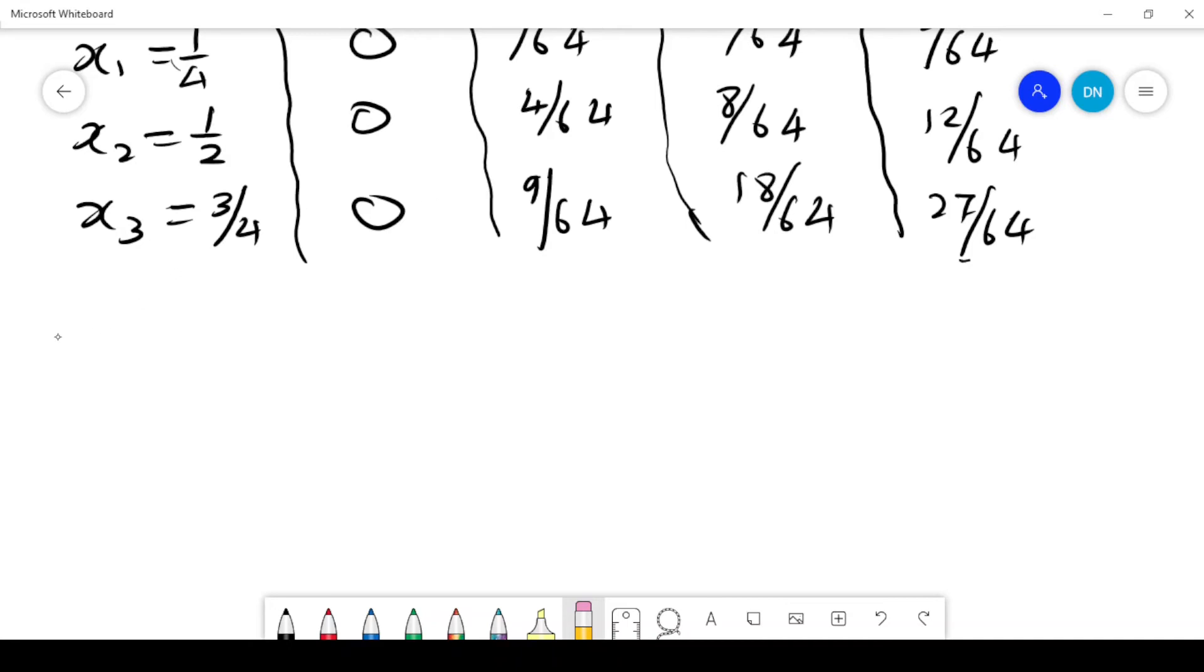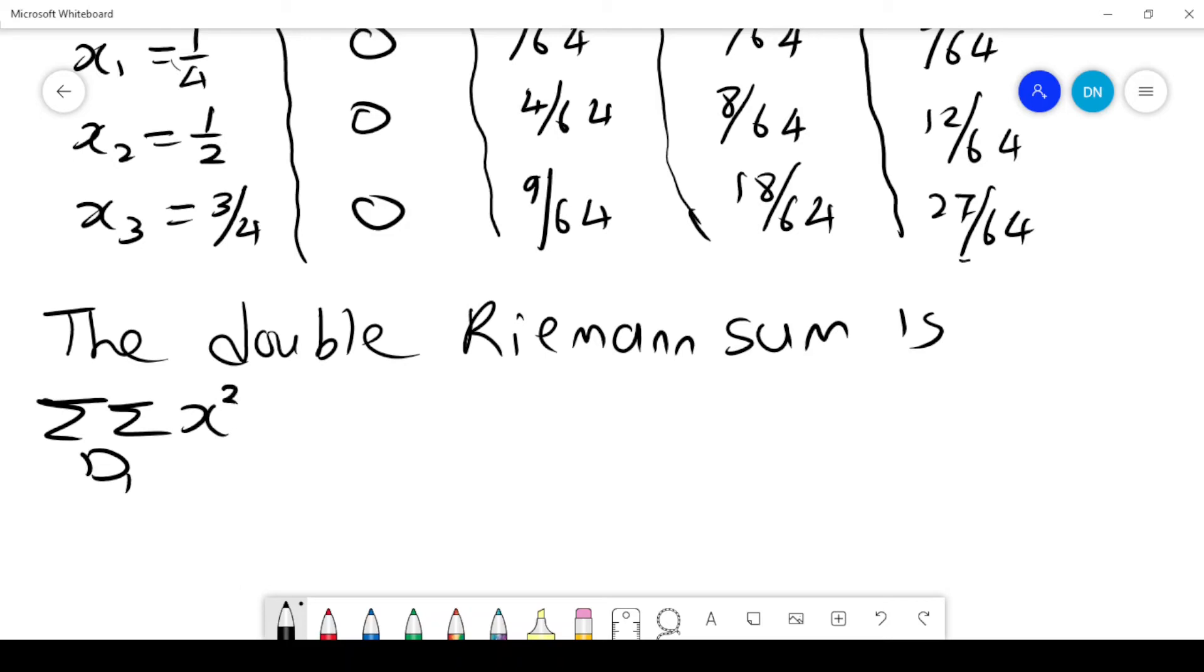So therefore, we can go ahead and find that the double Riemann sum is given by this double sum here, under D₁, x squared y, delta x, and delta y. So we sum all these values that we have in the table.